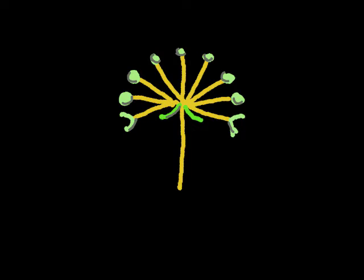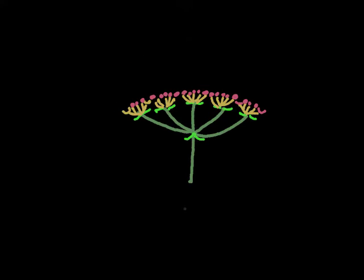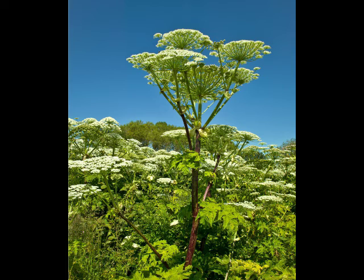Next we're looking at is an umbel. You can see that all the pedicels come from the same point on the peduncle, and they're all a similar length. There is also what's called a compound umbel, where they branch again, and those little tiny extra pedicels are again the same length coming off the first pedicel. Examples include the giant hogweed and angelica.